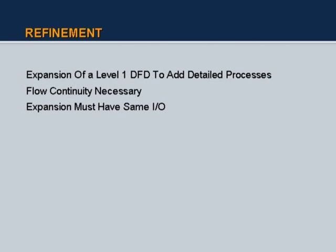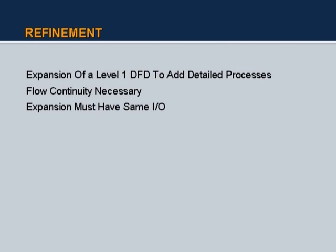This context diagram is merely a beginning model. You will then refine and expand it to level 1 DFD, adding more detailed processes. Flow continuity is necessary — if you show two inputs and one output at a certain level, any further refinement must contain only a subset of those inputs. A refinement cannot suddenly bring in more inputs from outside. Additional flows may emerge within that level, but continuity needs to be maintained. The expansion must preserve the same inputs and outputs.